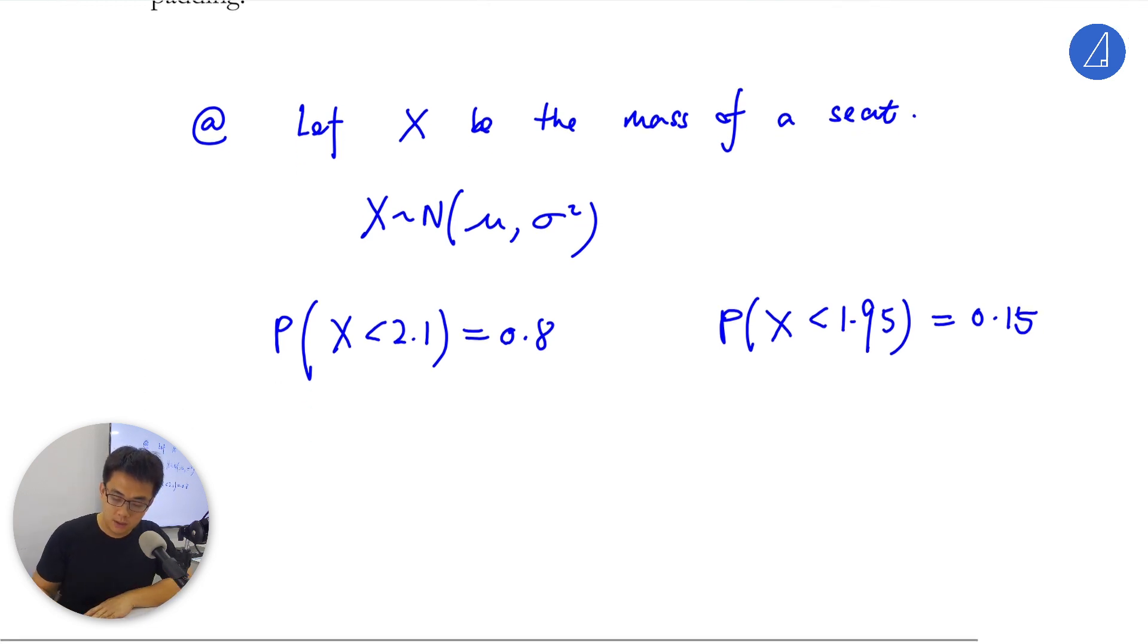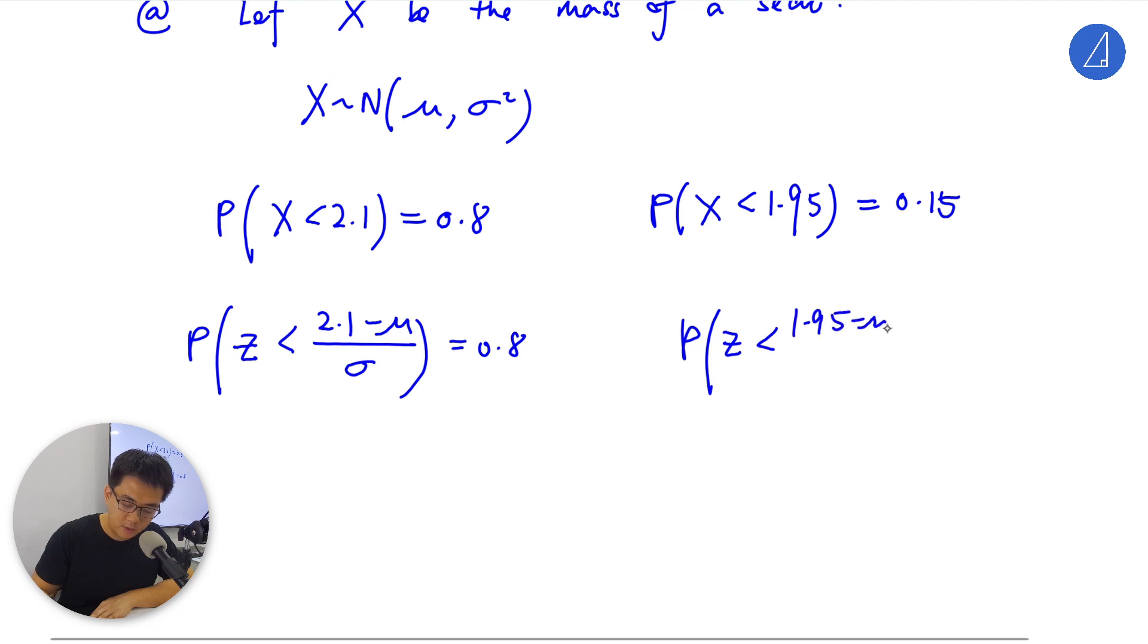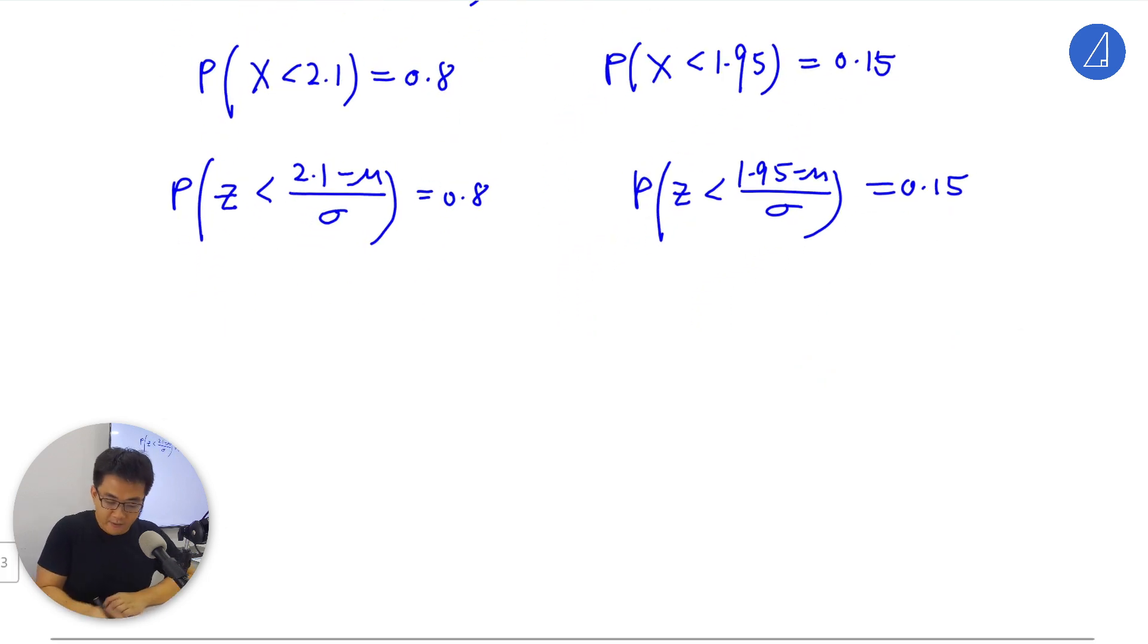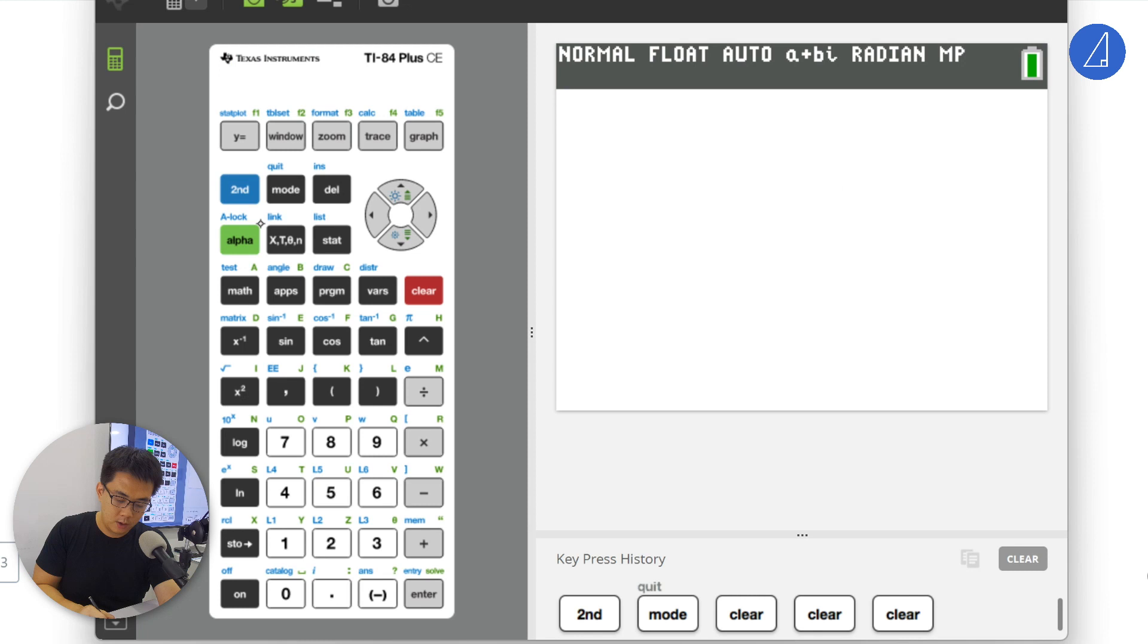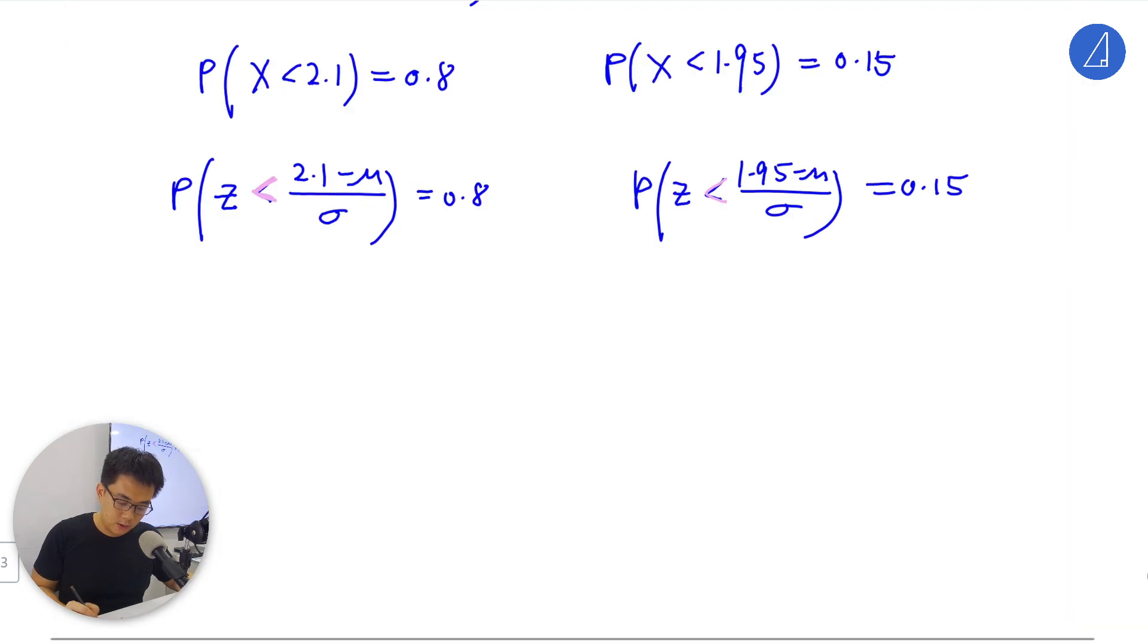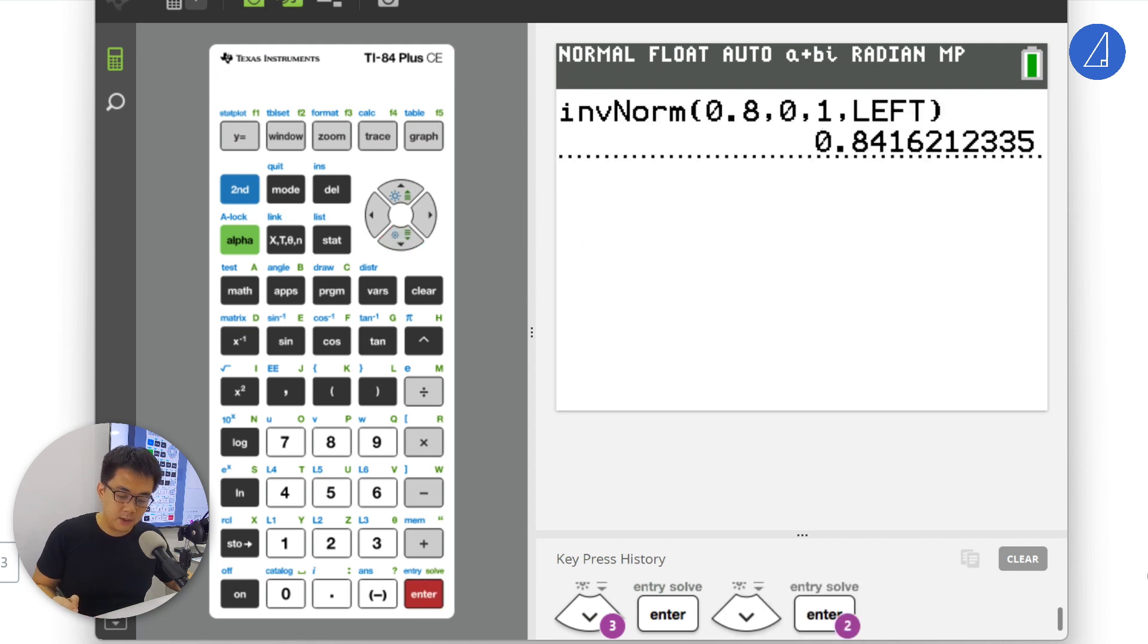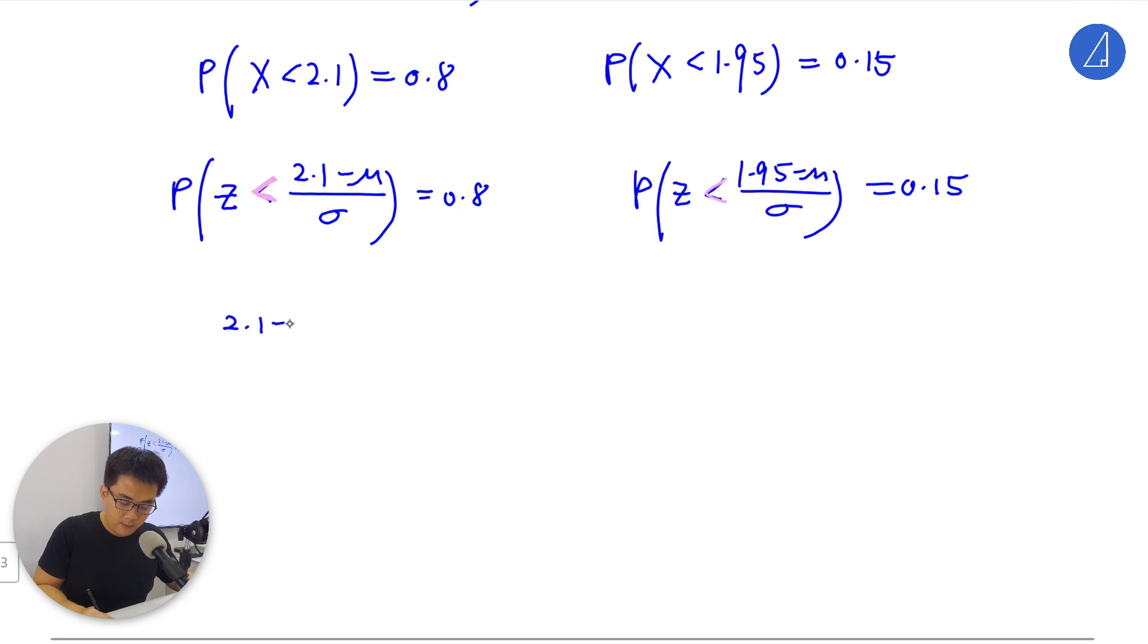What we need to do is use standardization. So P(Z < (2.1 - mu)/sigma) = 0.8, and P(Z < (1.95 - mu)/sigma) = 0.15. You just inverse norm left side. This is left because you're shading the left side. From here, normal inverse norm, area would be 0.8. This gives (2.1 - mu)/sigma = 0.841621.